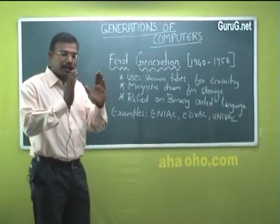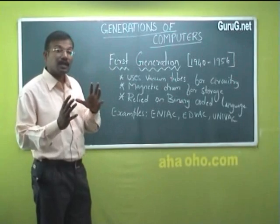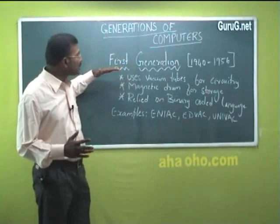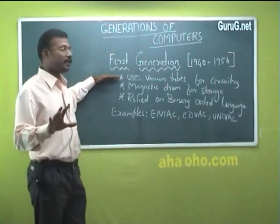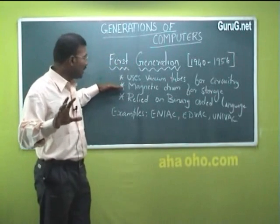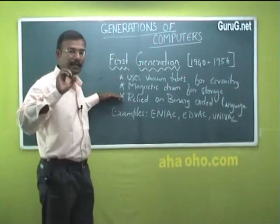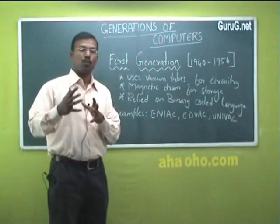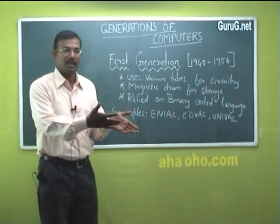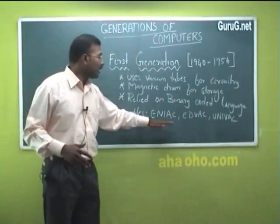During these 16 years, we used computers designed using vacuum tubes. The first generation computer uses vacuum tubes for circuitry, magnetic drums for storage, and most programming was done using binary language — that is, using only zeros and ones to give instructions. A few examples of first generation computers are ENIAC,